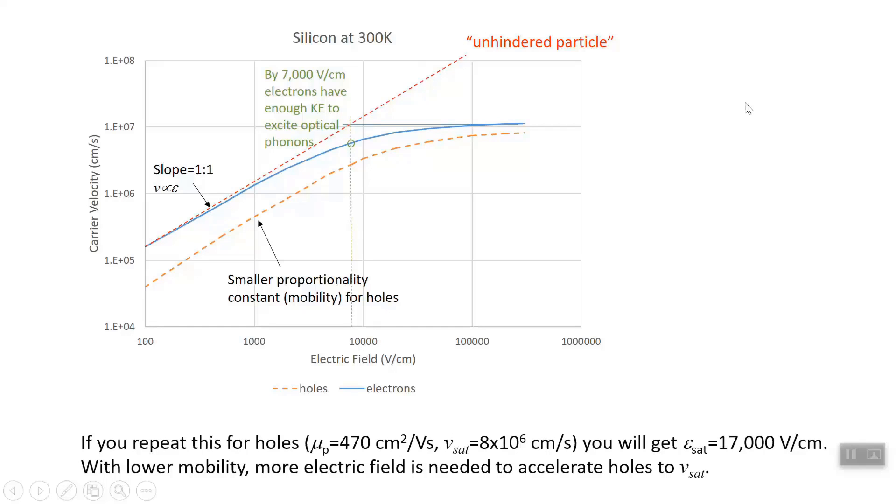One last little point is that you can go back and do this whole thing now for holes. And you might want to just go and do that, using this mobility from the same table, using this saturation velocity read approximately off this graph, and you'll get E_sat is larger, 17,000 volts per centimeter instead of 7,000. The important thing there is, holes have a lower mobility. Therefore, it takes more electric field to get them up to speed, up to the energy that they need, in order to interact with optical phonons. It would make sense, then, that holes have a larger saturation electric field. Keep that in mind, too, that holes do saturate at about 2 to 3 times the field that electrons saturate at.